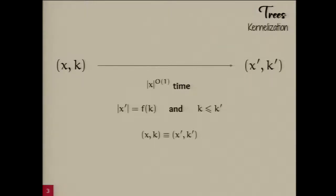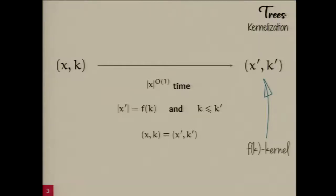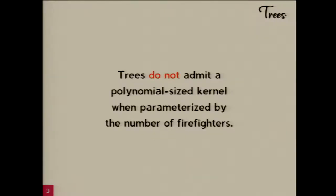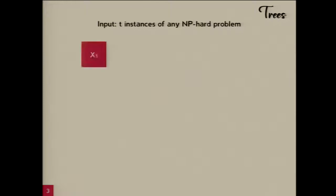The presence of a parameter really helps build this formalism, because without k, just insisting that the instance size strictly reduces doesn't leave you with a useful definition — no NP-hard problem would have such a compression algorithm. The holy grail in kernelization is to come up with kernels polynomial in size. The question is: does the firefighting problem have a polynomial kernel, at least when restricted to trees? Unfortunately, the answer is in the negative.